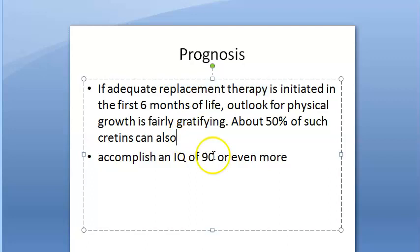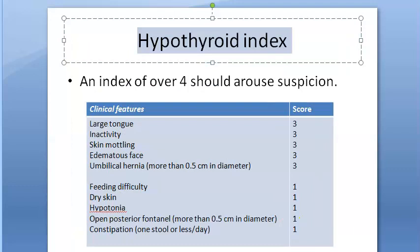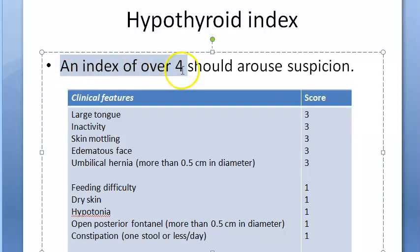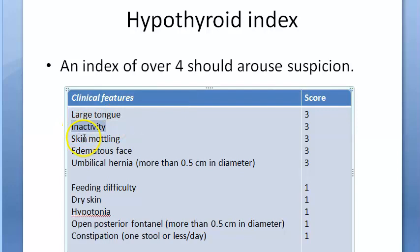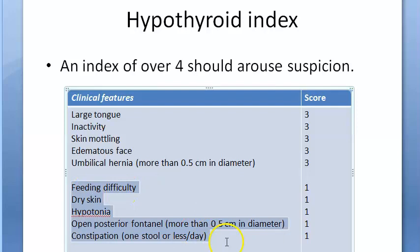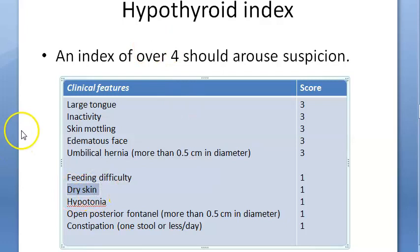There is a hypothyroid index to guide diagnosis. An overall index score of over 4 should arouse suspicion. Features scoring 3 points each are: large tongue, inactivity, skin mottling, edematous face, and umbilical hernia greater than 0.5 cm in diameter. Features scoring 1 point include feeding difficulty and dry skin. Skin mottling — marks with spots or smears — scores higher than plain dry skin.